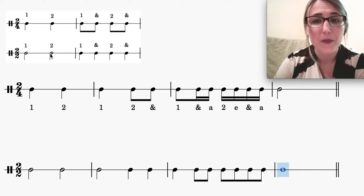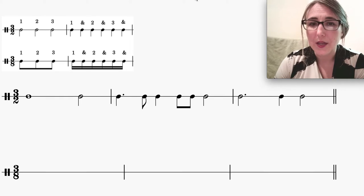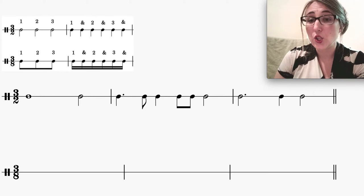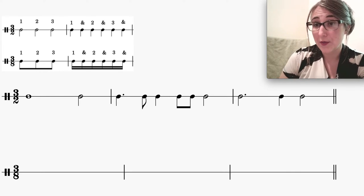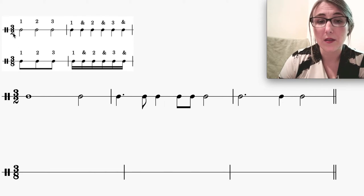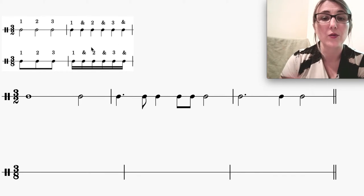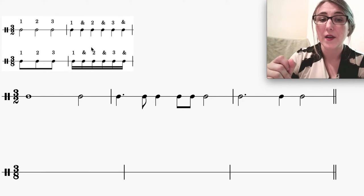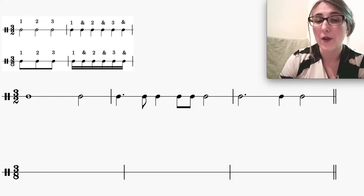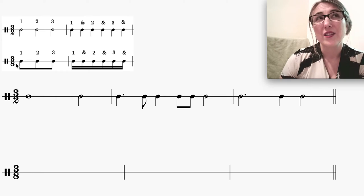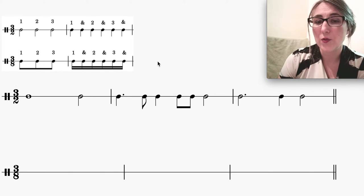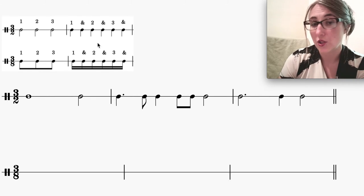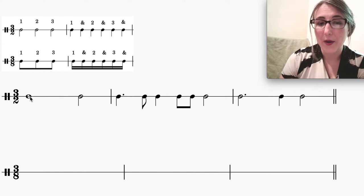Let's try another example going the other way. This example is in 3/2 time and we're going to put it into 3/8. In 3/2, a simple triple rhythm, I've got three beats in the measure and each beat is a half note. Singing this: one, two, three, one-and, two-and, three-and. In 3/8 time I still have three beats but each beat is an eighth note. So anywhere I have a half note it becomes an eighth note — we're quartering the rhythmic value to get from 3/2 to 3/8. The rhythm sounds exactly the same: one, two, three, one-and, two-and, three-and.